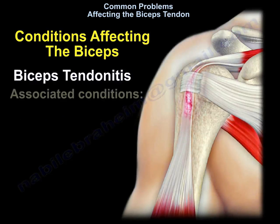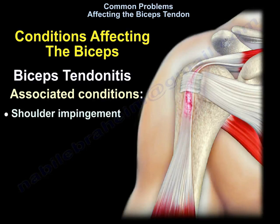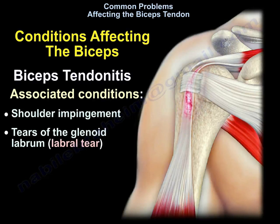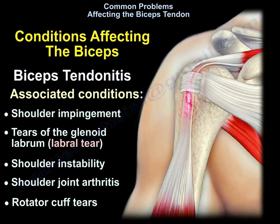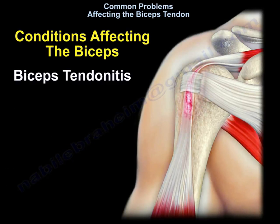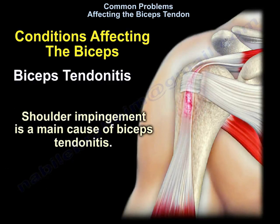Associated conditions include shoulder impingement, tears of the glenoid labrum called labral tears, shoulder instability, shoulder joint arthritis, and rotator cuff tears. Shoulder impingement is the main cause of biceps tendonitis.